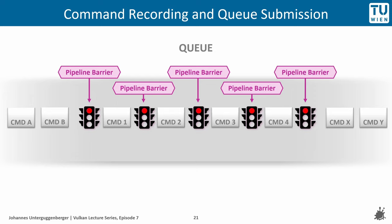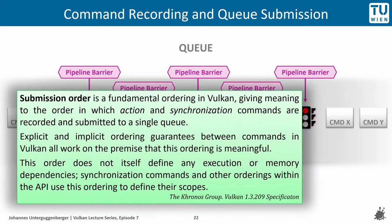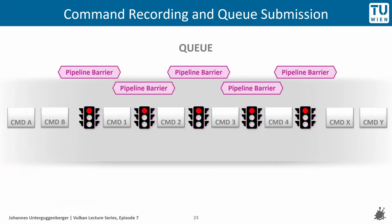The exact sequence of recording and submission of commands is meaningful in Vulkan and is called Submission Order. The Vulkan specification describes it as a fundamental ordering in Vulkan, giving meaning to the order in which action and synchronization commands are recorded and submitted to a single queue. Explicit and implicit ordering guarantees between commands all work on the premise that this ordering is meaningful. This order does not itself define any execution or memory dependencies — synchronization commands and other orderings use it to define their scope.